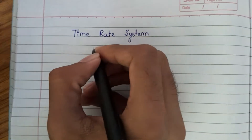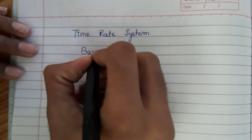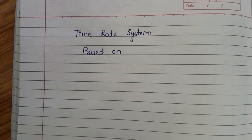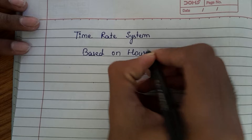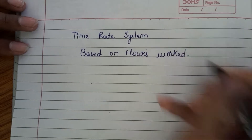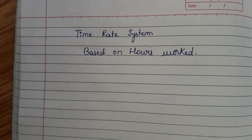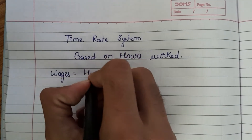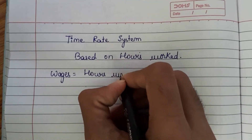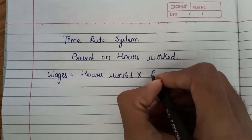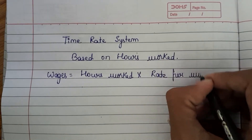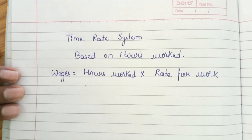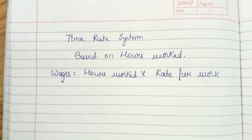In the time rate system, the payment is made based on hours worked. The wages formula is: wages equals hours worked multiplied by the rate per hour. The rate per hour is the amount paid per hour, known as the rate per work.